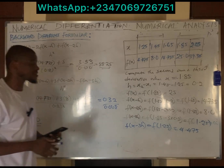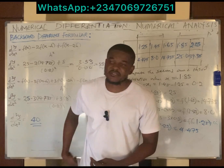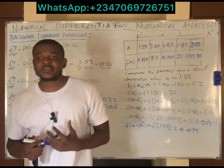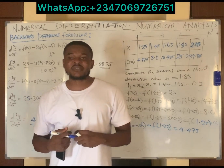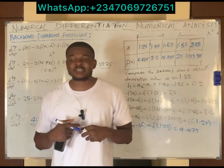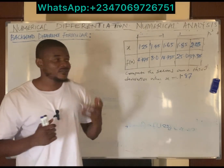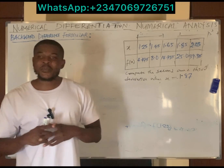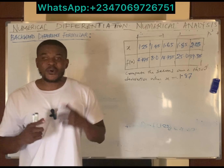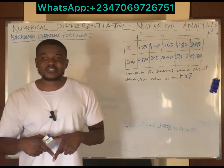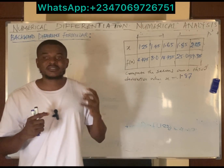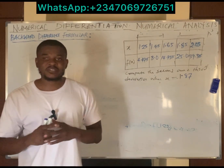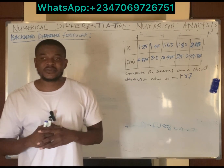That's how you employ the backward difference formula to solve numerical differentiation. As an assignment, try to approximate the first, second, and third derivative when x is 1.87. Share your answers or experience in the comment section or via WhatsApp. In the next class, we'll be looking at the central difference method of numerical differentiation. Hope to see you in that video — stay blessed!